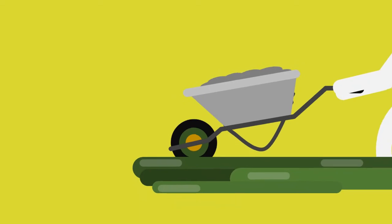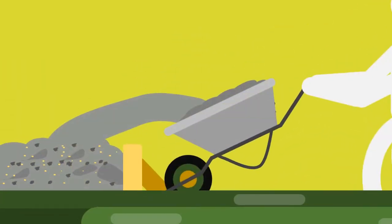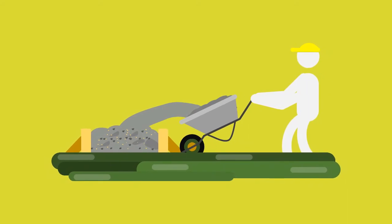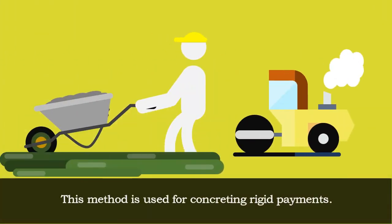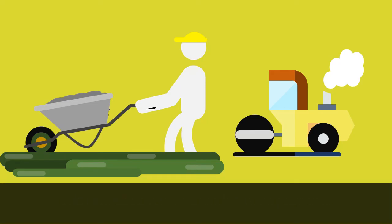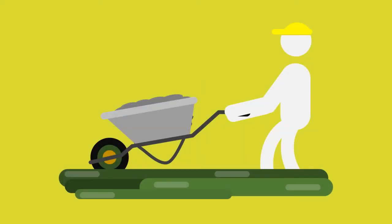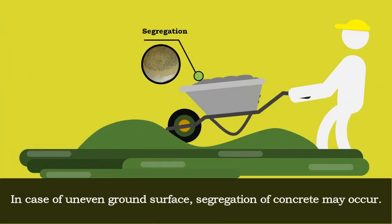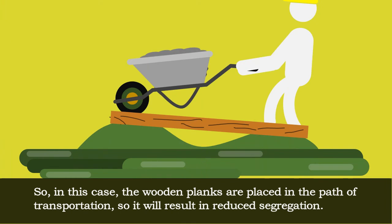Wheelbarrow transportation is used for placing concrete at ground level and is commonly used for concreting rigid pavements. The wheelbarrow is fitted with pneumatic wheels to facilitate movement. In the case of uneven ground surfaces, segregation of concrete may occur, so wooden planks are placed along the path of transportation to reduce segregation.